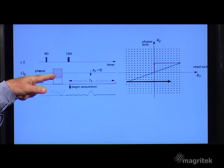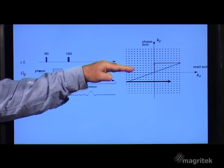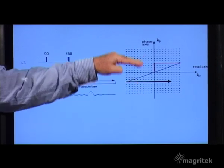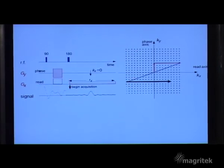By having different areas of pulse here, some negative, some positive, we can move our way to different lines of the k-space along the y-axis at will. That is the way we are able to fill the matrix.